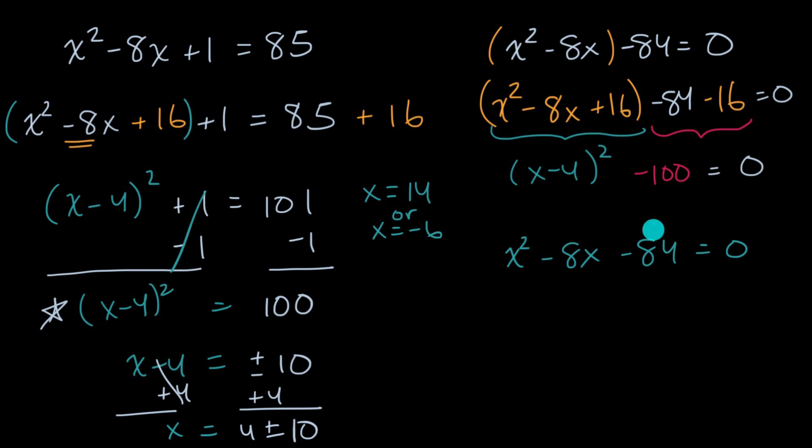And there we could just look at the factorization of negative 84, of 84 generally. It could be two times 42. And obviously one of them would have to be negative, one of them would have to be positive in order to get to negative 84. But the difference between these two numbers, if one was positive and one is negative, is a lot more than eight. So that doesn't work.